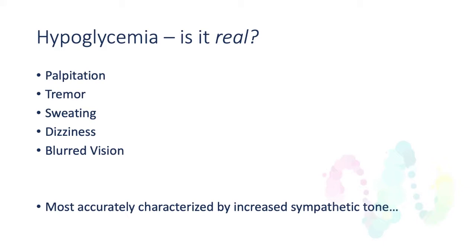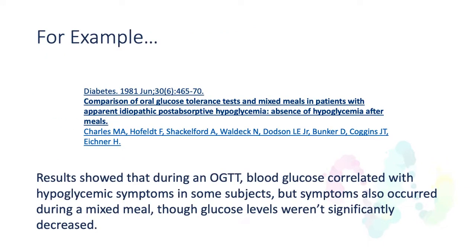From a symptomatic perspective, a typical association of symptoms to hypoglycemia is going to be increased sympathetic tone. With sympathetic overdrive, there's a set of symptoms: sometimes heart palpitations, sometimes a fine tremor, sometimes sweating, sometimes dizziness, sometimes blurred vision. In most cases, if we're talking hypoglycemia-like symptoms, these symptoms are going to be relieved when a patient has food. So the question is: is it real, or is it a sign of an adaptation response?